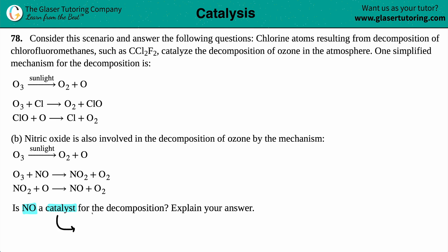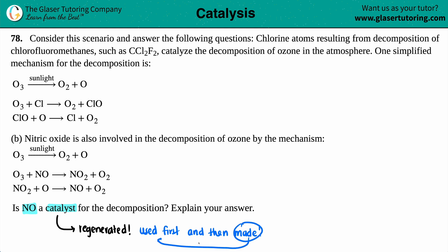Let's figure out what a catalyst is. A catalyst always gets regenerated, which means you will never lose any amount of catalyst, because what a catalyst does is it gets used up first and then made again. You use it, then it comes back, and you use it again — it's a constant endless loop. If you're using something, that means it has to be on the reactant side.